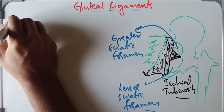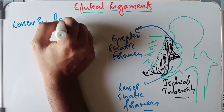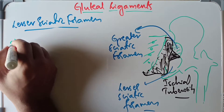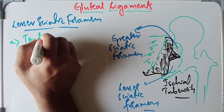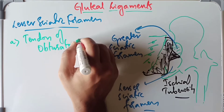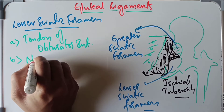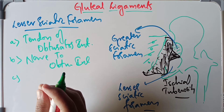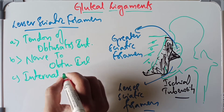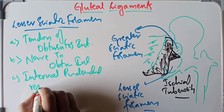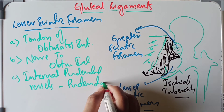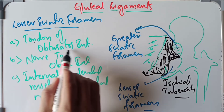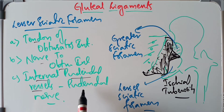Now discussing the structures passing through the lesser sciatic foramen. The key structures are: the tendon of obturator internus, the nerve to obturator internus, the internal pudendal vessels, and the pudendal nerve.